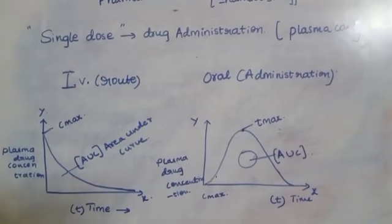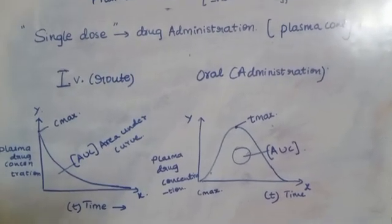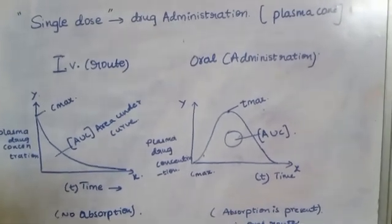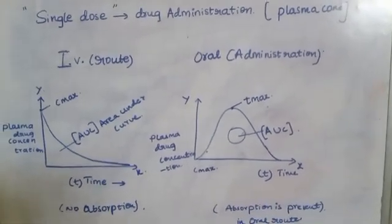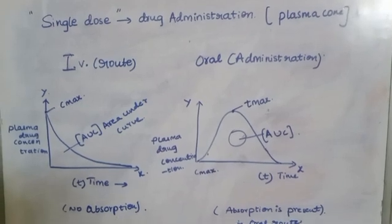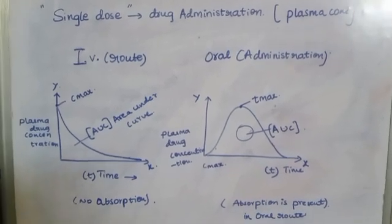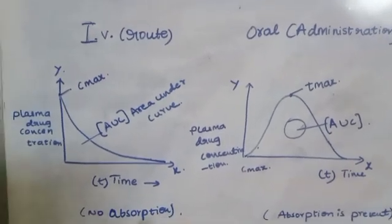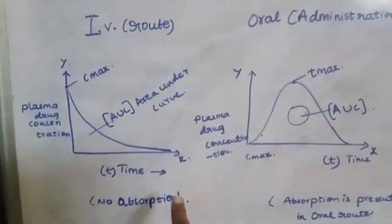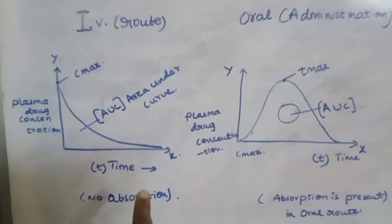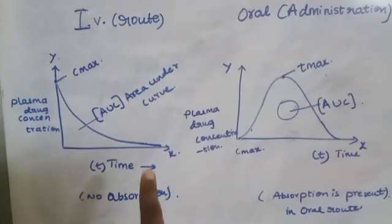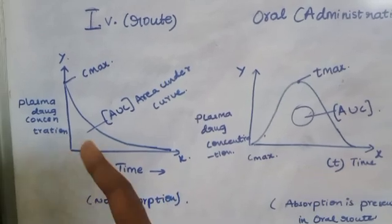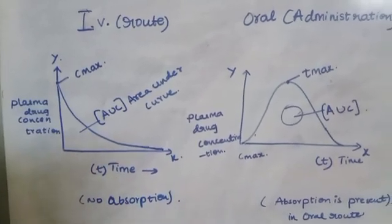Single dose means drug administration via either IV route or oral route. If it is IV route, then we call it intravenous. The graph is plotted in terms of time on the x-axis and plasma drug concentration on the y-axis.